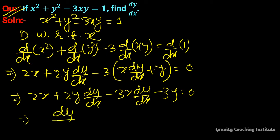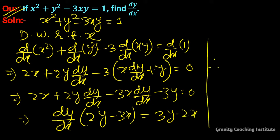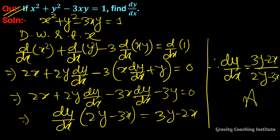So dy/dx times (2y minus 3x) equals 3y minus 2x. Therefore, dy/dx equals (3y - 2x) divided by (2y - 3x). Answer.